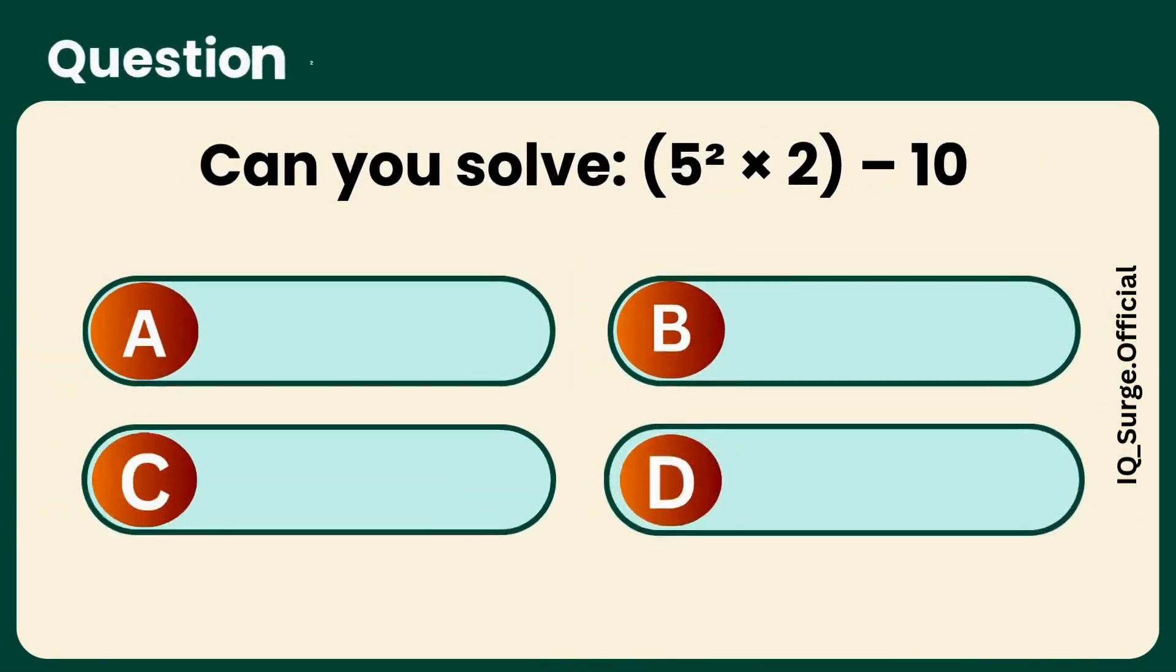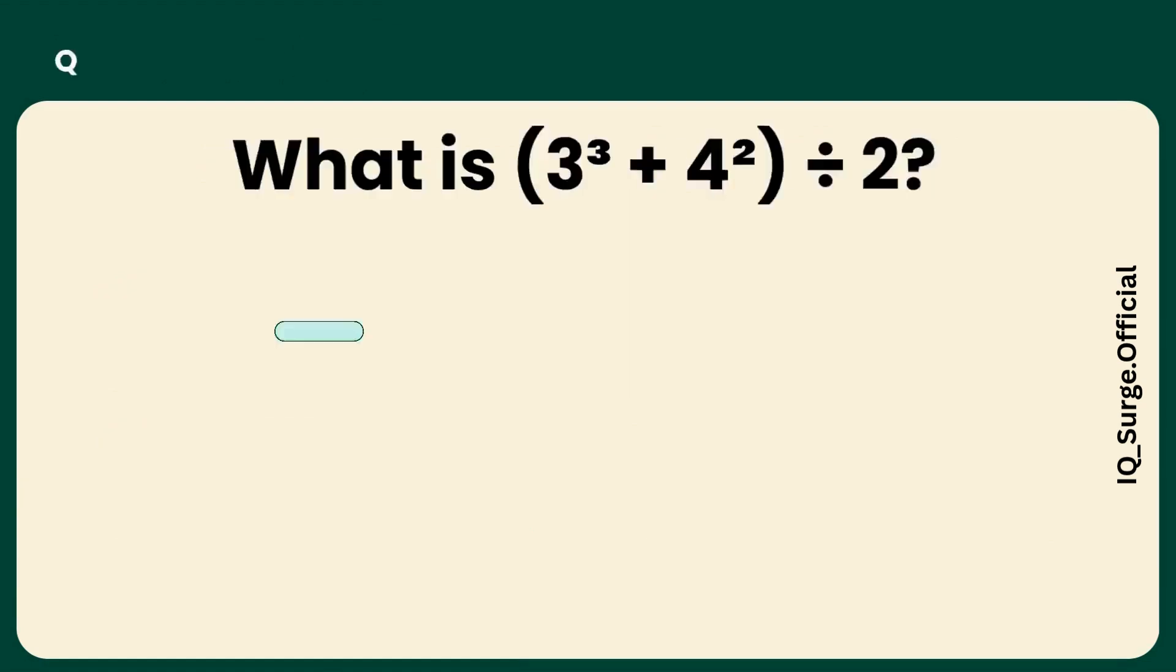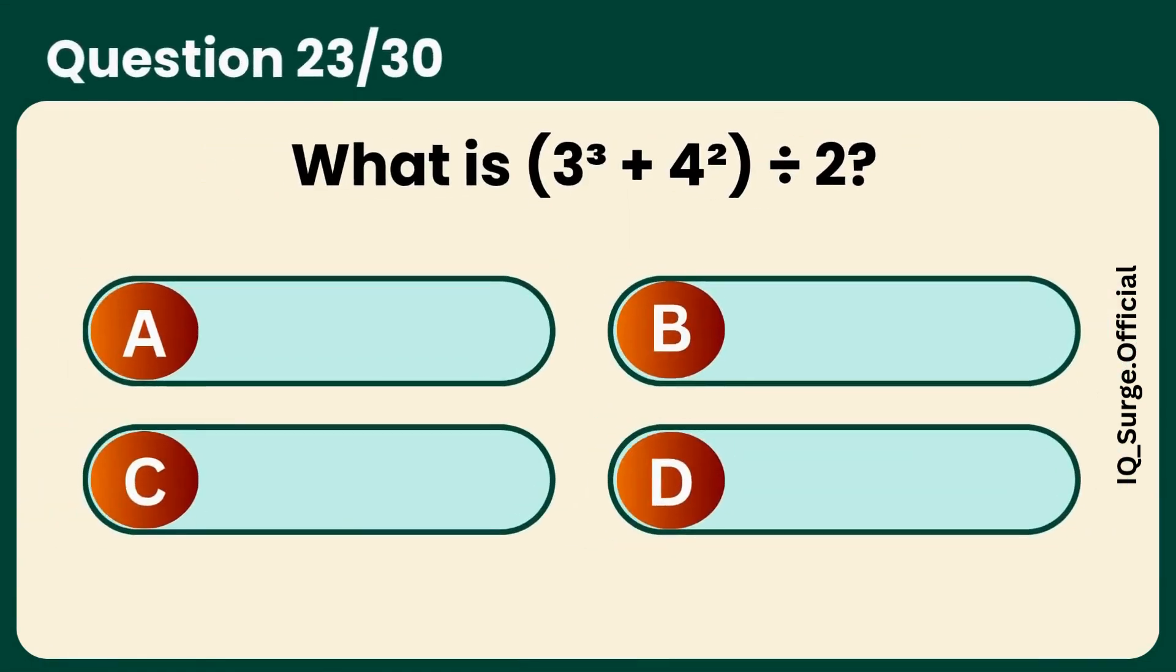Can you solve 5 squared times 2 minus 10? Answer C, 40.